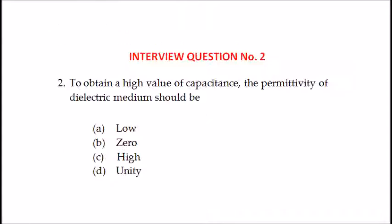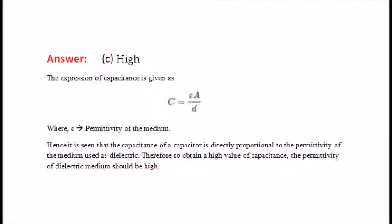Second question: to obtain a high value of capacitance, the permittivity of the dielectric medium should be — low, zero, high, or unity? The answer is high. Because the capacitance of a capacitor is directly proportional to the permittivity of the medium used as dielectric. Therefore, to obtain a high value of capacitance, the permittivity of the dielectric medium should be high.